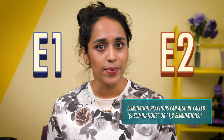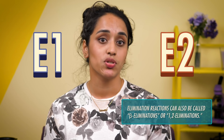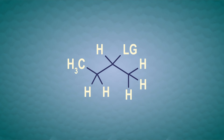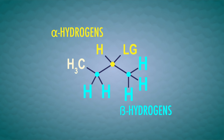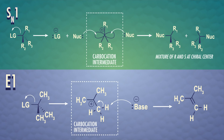To talk about the difference between these elimination mechanisms, we need some new terms. The alpha-carbon of the substrate is the carbon with the leaving group attached to it. Alpha-hydrogens are bonded to the alpha-carbon. The beta-carbons of the substrate are any carbons attached to the alpha-carbon. Any hydrogens attached to a beta-carbon are called beta-hydrogens.